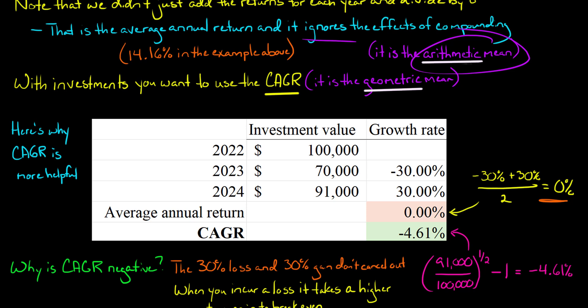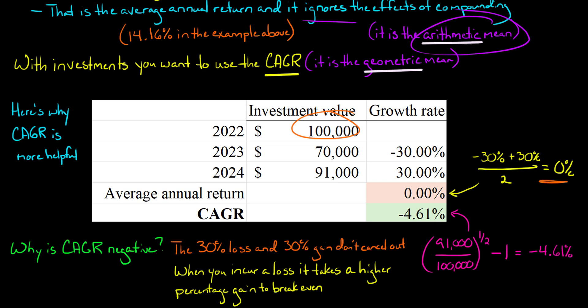And you say, why? Well, if you say, this average annual return is 0%, you started with $100,000. Now you've got $91,000. So you lost money. And the compound annual growth rate captures that because it's negative here. So if you're wondering, this doesn't make sense. I don't understand. Why would I have a 30% loss and then the very next year have a 30% gain? Why don't I end up back at $100,000? Why didn't I break even?